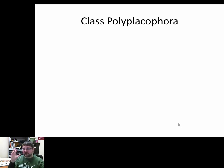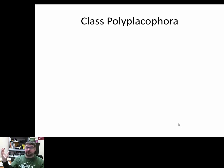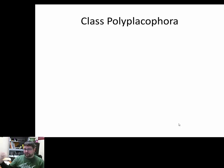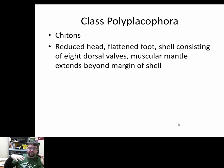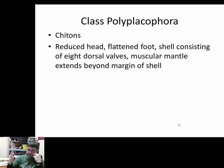Moving away from cephalopods — a remarkable group that stands apart from other molluscs in intelligence, parental care, and circulatory systems — let's look at some other important classes. Polyplacophora, or the chitons, are similar to bivalves except they only have a dorsal shell, no bottom half. The foot is flattened and extended, covering the entire ventral surface. They feed on algae using a radula, just like gastropods, and can move with their foot.